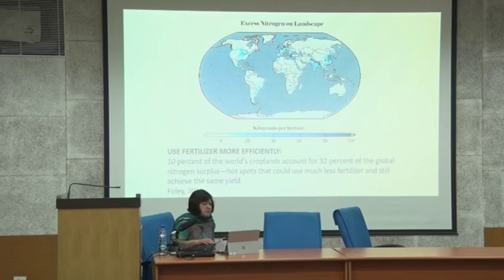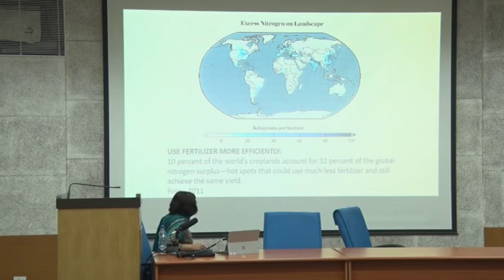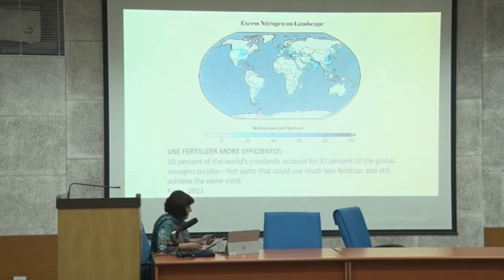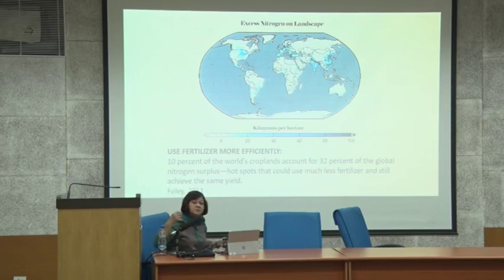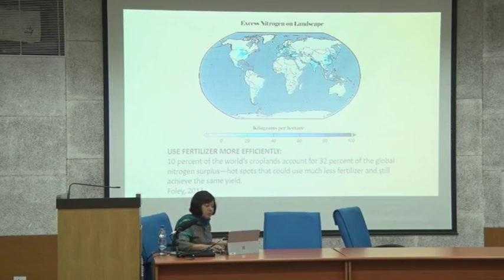This chart, from a 2011 Scientific American paper, shows areas where you could use less fertilizer and get the same yield. India and the US Midwest — where corn is produced — are highlighted as places with significant over-application of fertilizer that could be easily reduced without any yield loss, thus reducing the pollution problem.